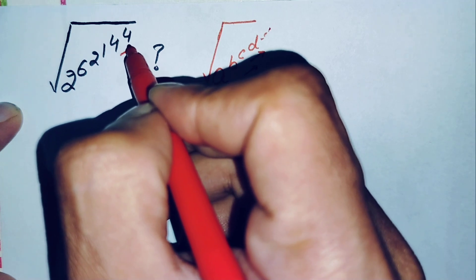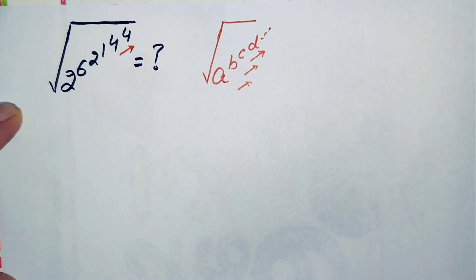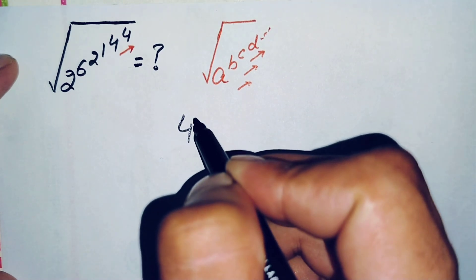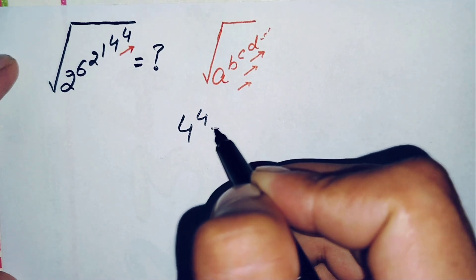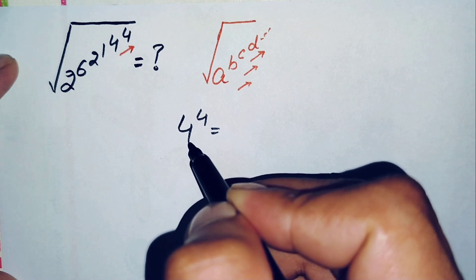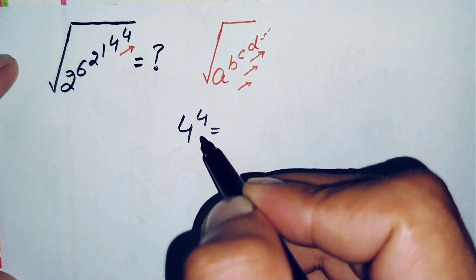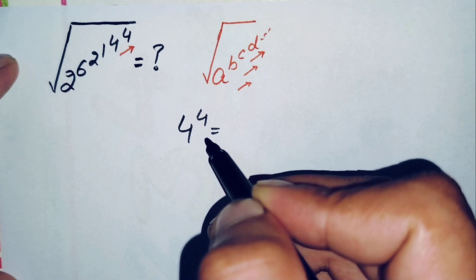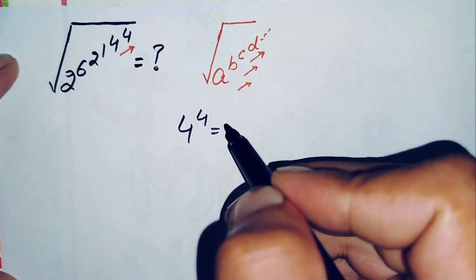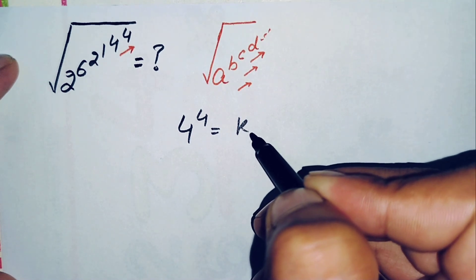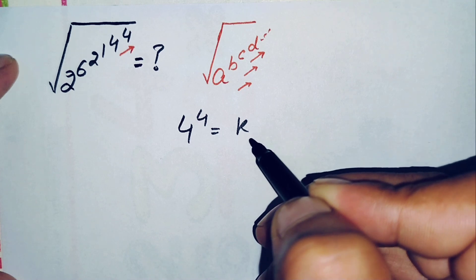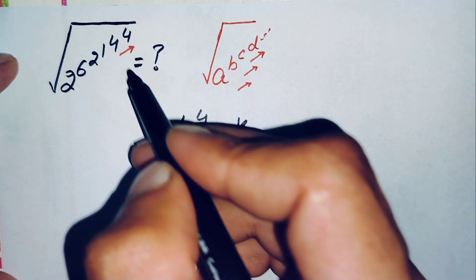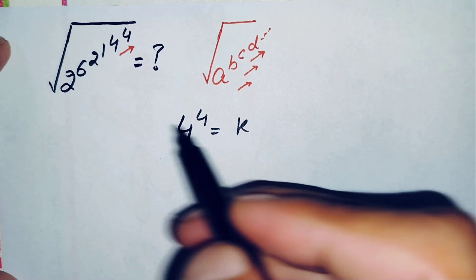Following this method, we first solve the innermost part: 4 raised to power 4. This means multiplying 4 four times, which gives a number greater than 100 and less than 1000. Let us call this number K, where K is between 100 and 1000. We will replace the power 4 raised to power 4 with K.